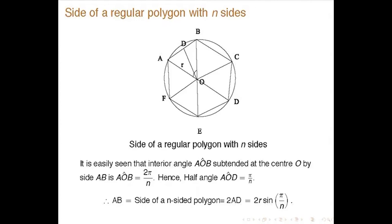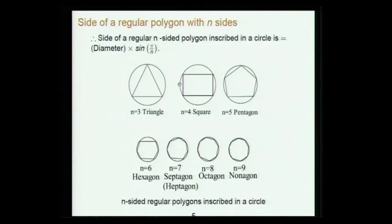The exact result is: suppose a polygon of n sides is inscribed in a circle. The interior angle AOB is 2π/n because 360 degrees is 2π. Divided by n, each angle is 2π/n, and the half angle is π/n. The side of the polygon is twice AD, and AD itself is R·sin(π/n). So AB = 2R·sin(π/n). The side of a regular n-sided polygon inscribed in a circle is diameter times sin(π/n).